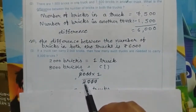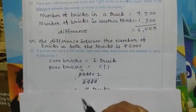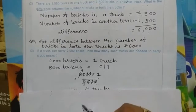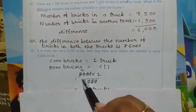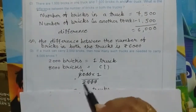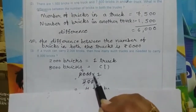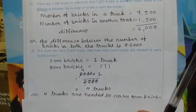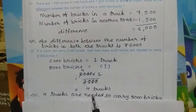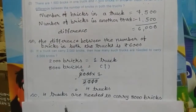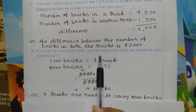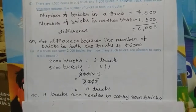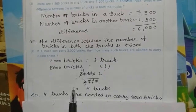Now speak the table of 2. Two के table में कहां पर eight आता है? Two ones are two, two twos are four, two threes are six, and two fours are eight. So eight — four is the answer. Two cut, eight cut — answer is four. नीचे तो कुछ numbers बचे नहीं है, ऊपर एक four और एक one है — multiplication means four ones are four. Answer is four trucks. So: four trucks are needed to carry eight thousand bricks.